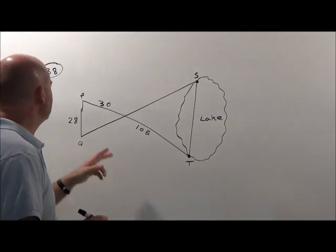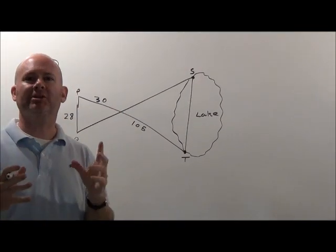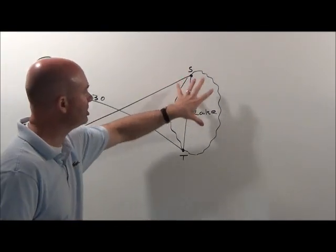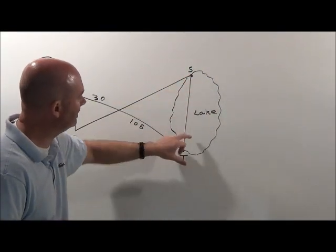Here we go with problem 38. As soon as I see this picture, I'm seeing a small triangle and a large triangle. They're talking about what's the width across the lake.